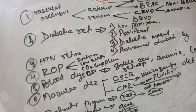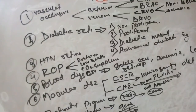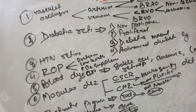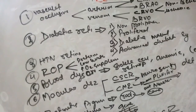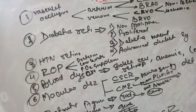At last we will study about leucocoria, also known as white pupillary light reflex. There is a single mnemonic '3CR' which we will study later about the causes for leucocoria. In this way we will conclude our retina topic. Thank you.